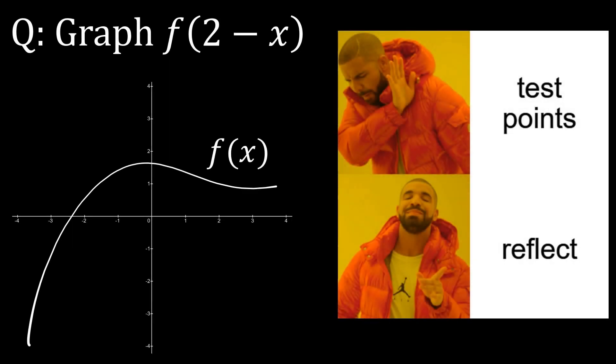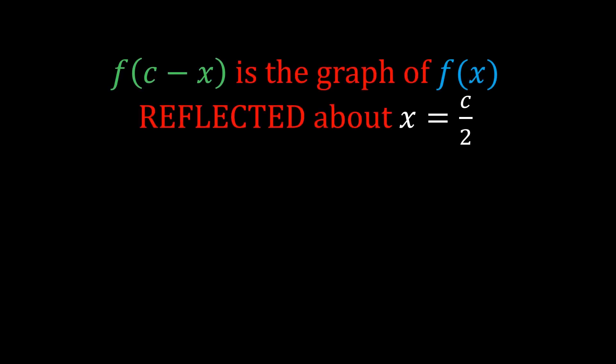This question is a joke if you know this one trick. Here's how it goes: f(c-x) is the reflection of f(x) about the vertical line x equals c/2.